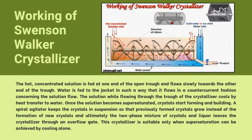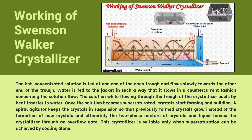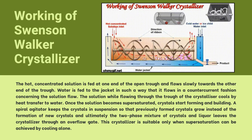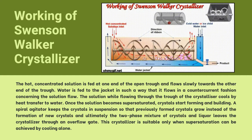For the working of the Swenson Walker crystallizer: think of the trough as a long path. At one end, a hot and concentrated solution is poured in. As the solution slowly moves along the path it cools down due to cooling water flowing around the trough. Once the solution becomes supersaturated, crystals start to form and grow. The spiral agitator gently stirs the crystals to prevent them from sticking to the bottom, allowing them to float and grow bigger. By the time the solution reaches the other end, it is full of growing crystals that spill out through a gate. This crystallizer is suitable only when supersaturation can be achieved by cooling alone.